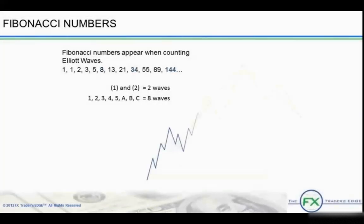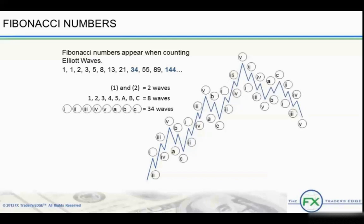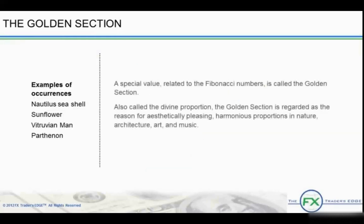To summarize, we have subdivided the eight-wave cycle into its sub-waves to get 21 waves for the impulse sequence and 13 waves for the corrective sequence. Adding them together gives 34 waves. If we were to break the waves into further sub-waves, they add up to 144 waves.